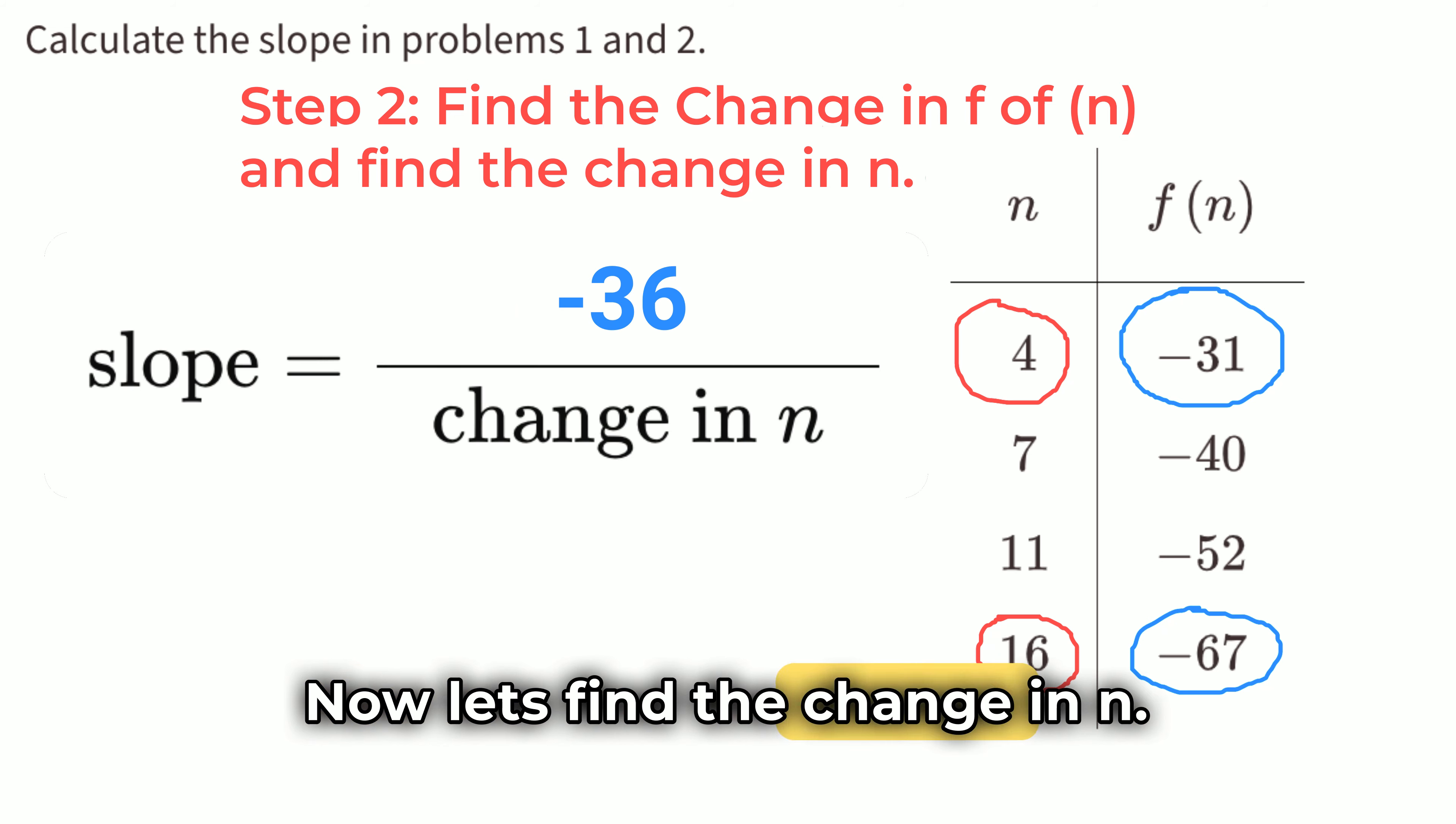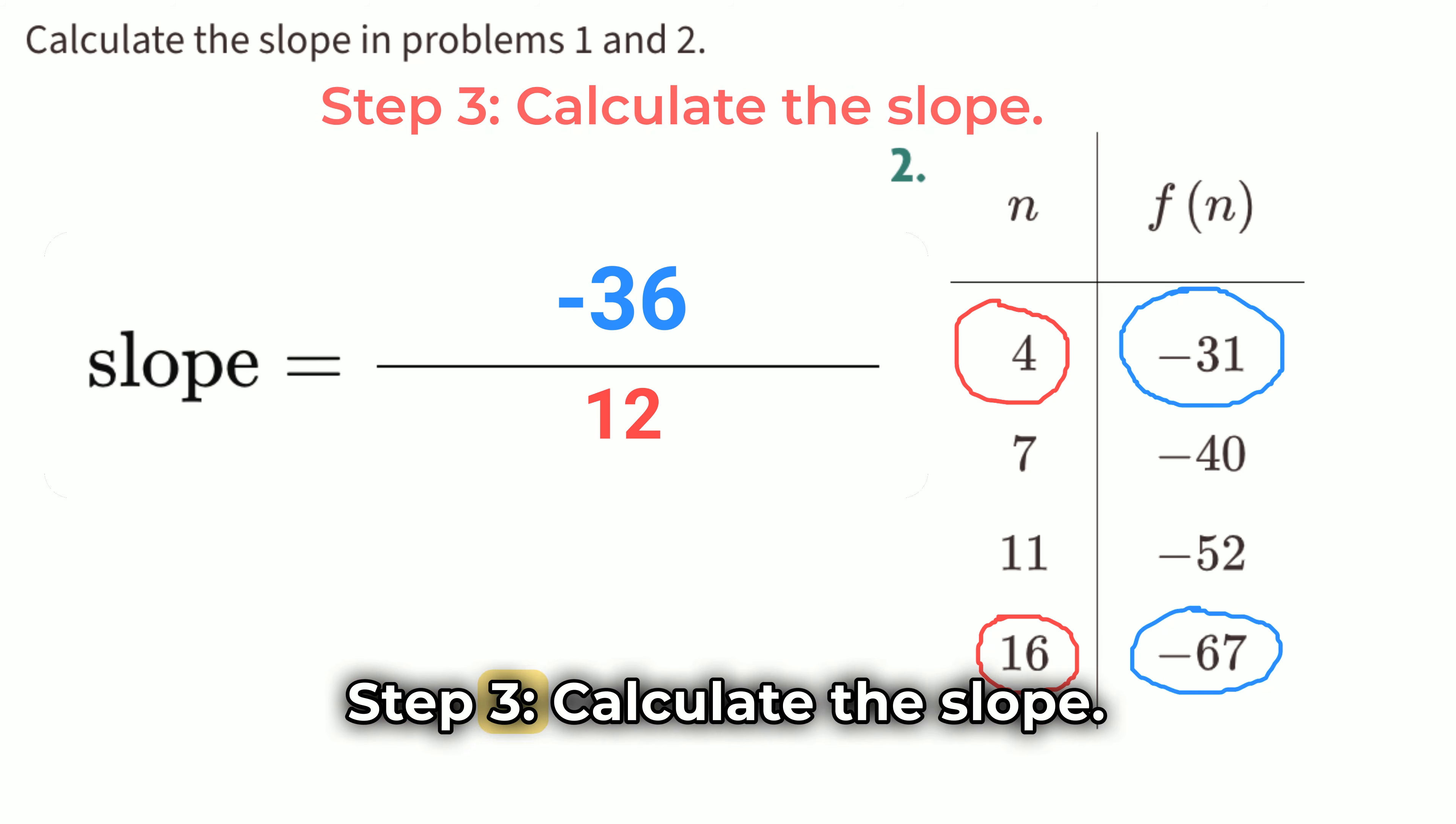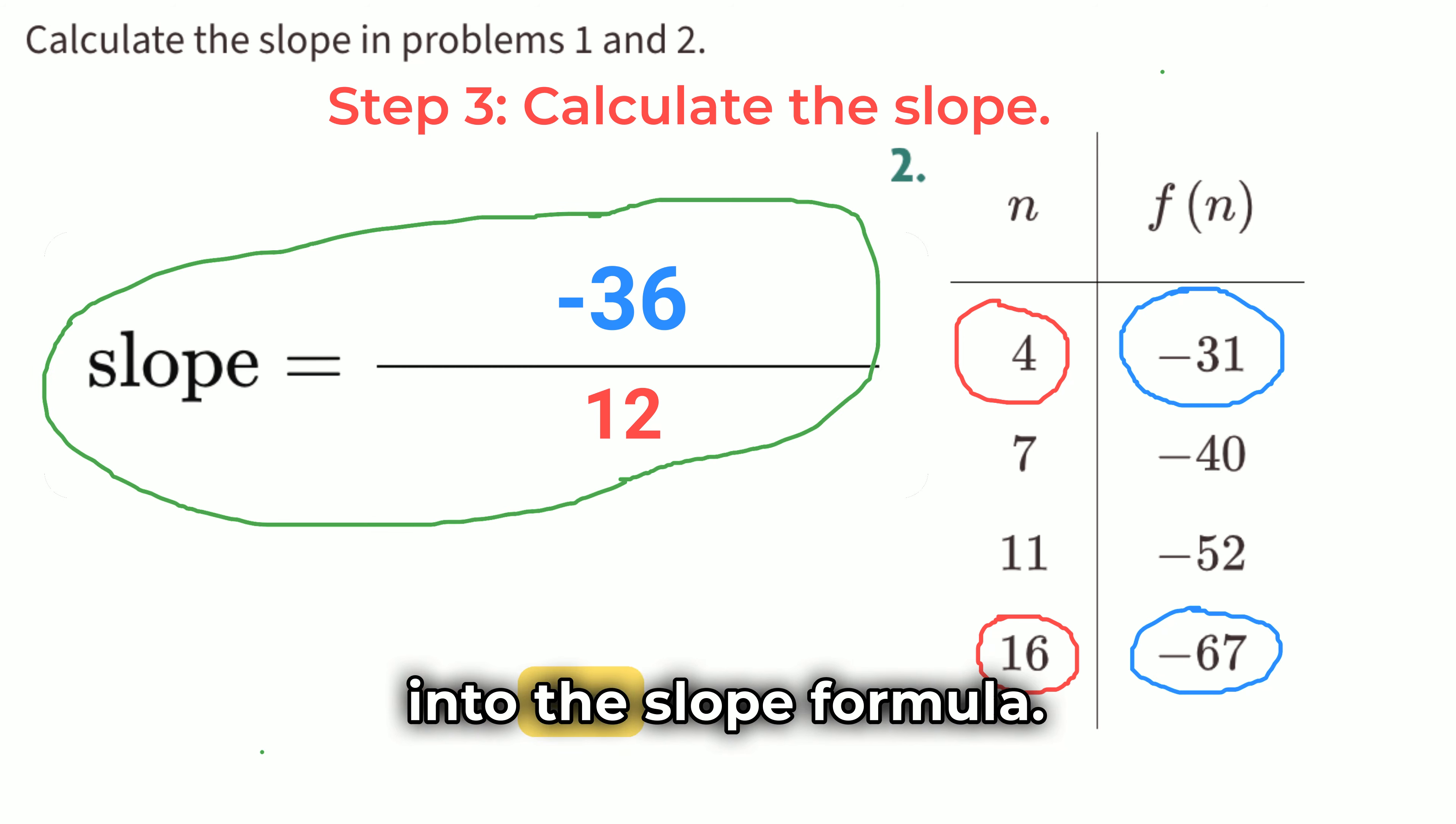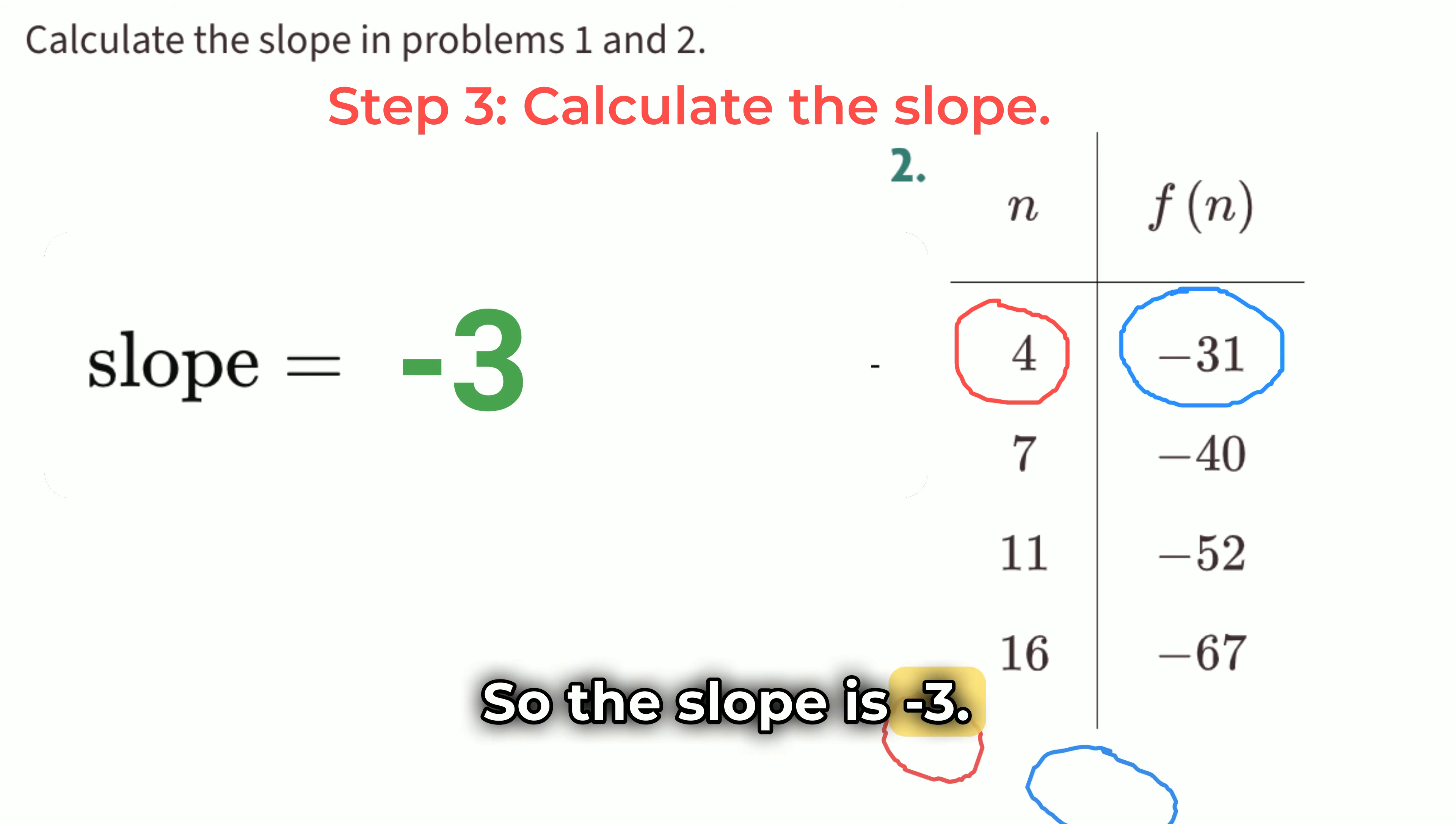Now, let's find the change in n. The change in n is 16 minus 4, which equals 12. So, the change in n is 12. Step 3. Calculate the slope. Now, we can plug these values into the slope formula. Slope equals negative 36 over 12, which equals negative 3. So, the slope is negative 3.